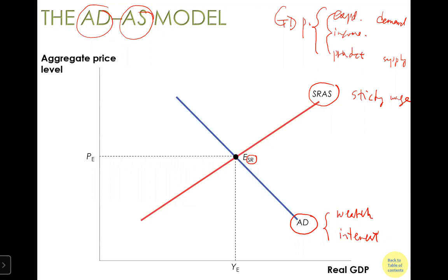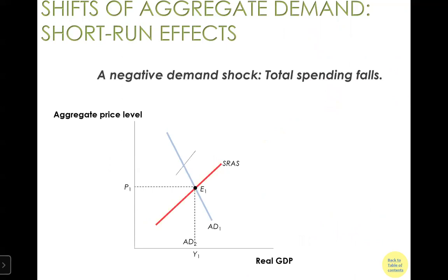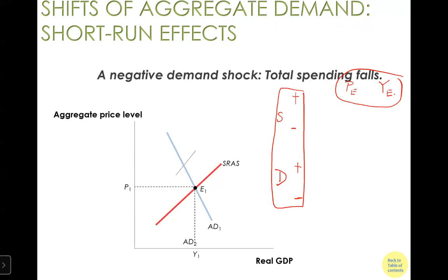Today I'm going to explain long-run equilibrium. In the short run, aggregate supply and aggregate demand decide how equilibrium will look — giving us equilibrium price and equilibrium quantity. We also looked at four possible shocks: positive supply shock, negative supply shock, positive demand shock, and negative demand shock, and how they affect equilibrium price and quantity.